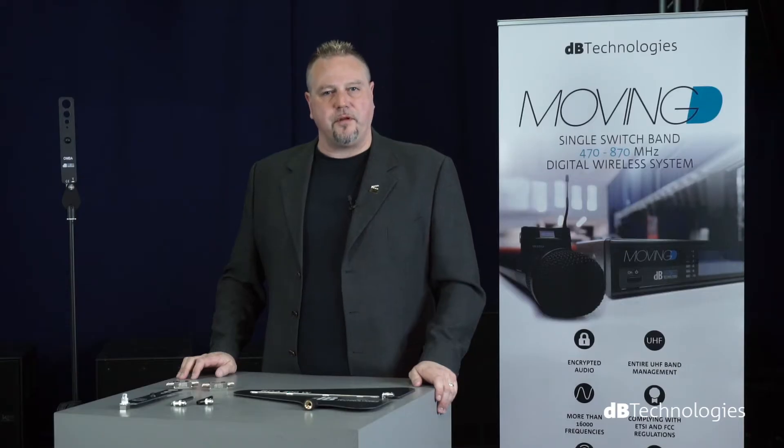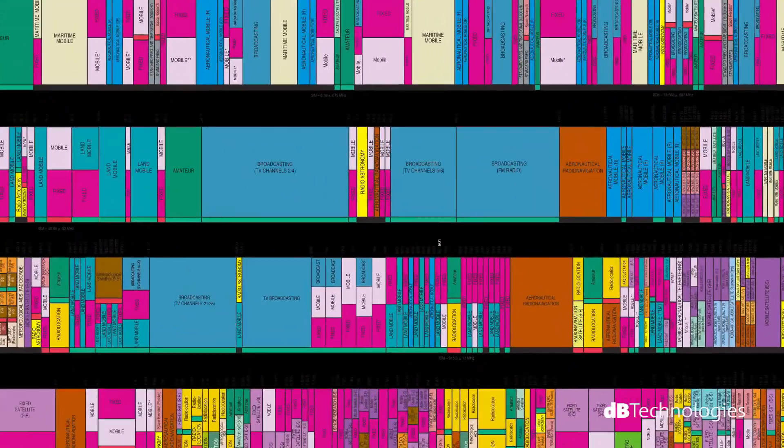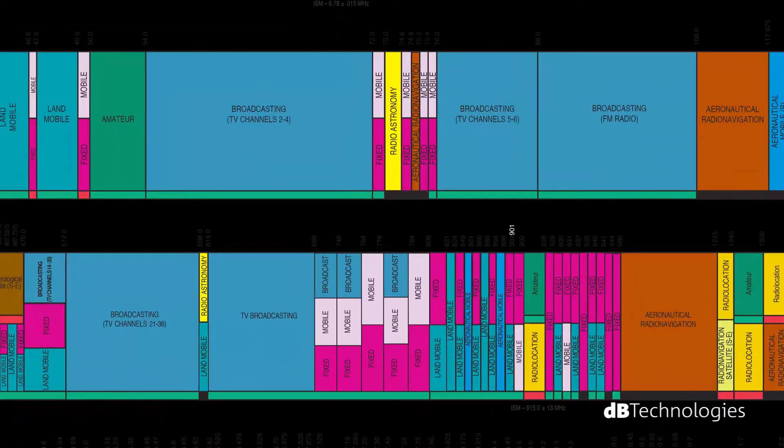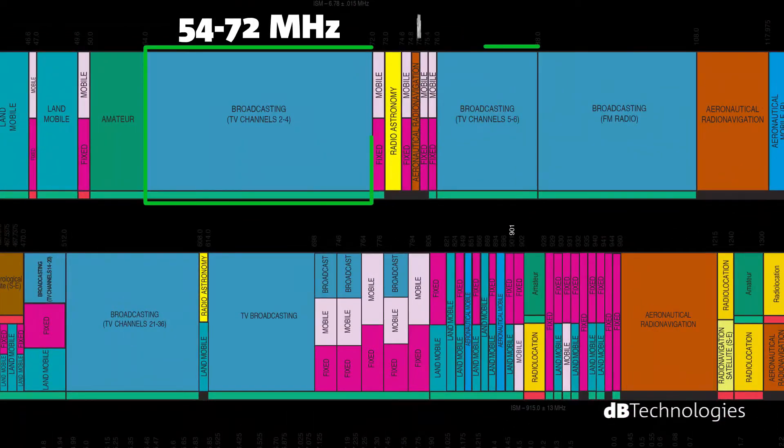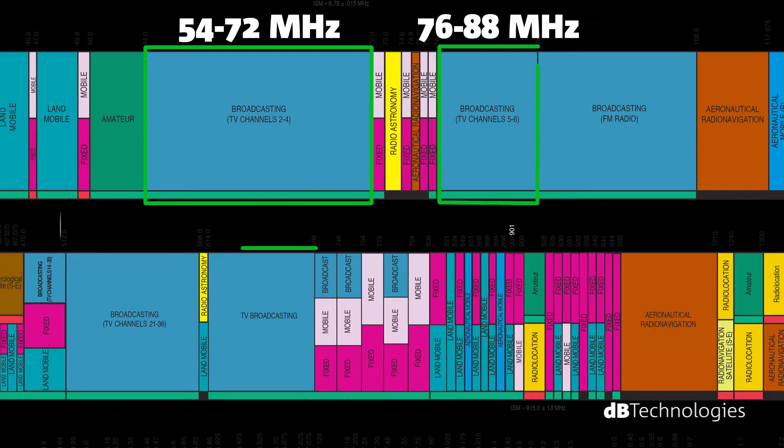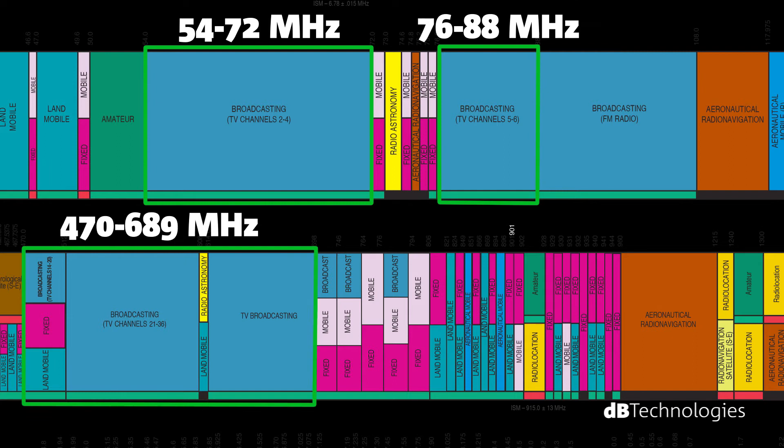Let us now consider an example of how available frequencies are divided. As you may notice, the broadcasting part is in common with digital TV broadcasters and at higher frequencies it borders with telephony, LTE 4G.